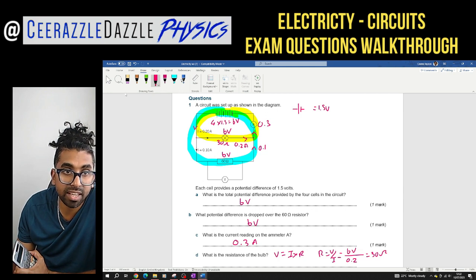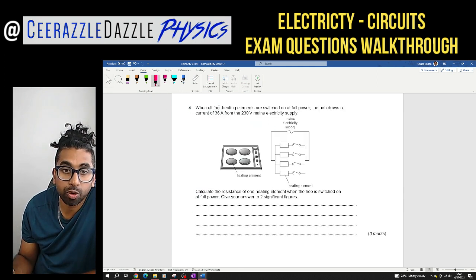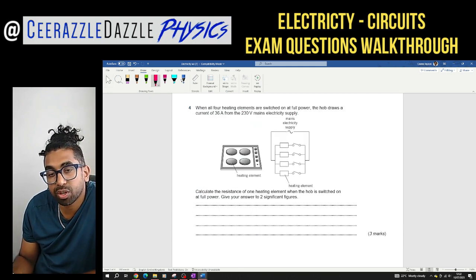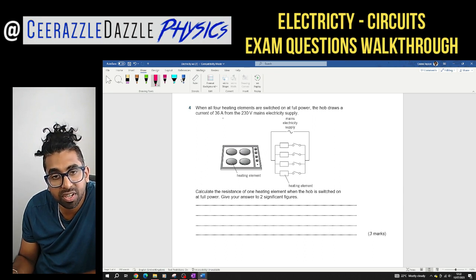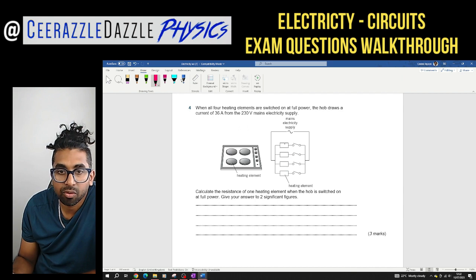Okay, so now we've done this. Let's do one more. Question four. When all four heating elements are switched on at full power, the hob draws a current of 36 amps from the 230 volts main supply. Calculate the resistance of one heating element when the hob is switched on at full power. Give your answer to 2 significant figures.